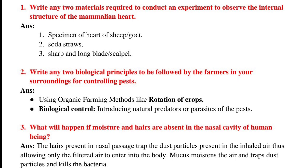Section 1, Question number 1: Write any two materials required to conduct an experiment to observe the internal structure of the mammalian heart. Answer: 1. Specimen of heart of sheep or goat. 2. Soda straws. 3. Sharp and long blade or scalpel.